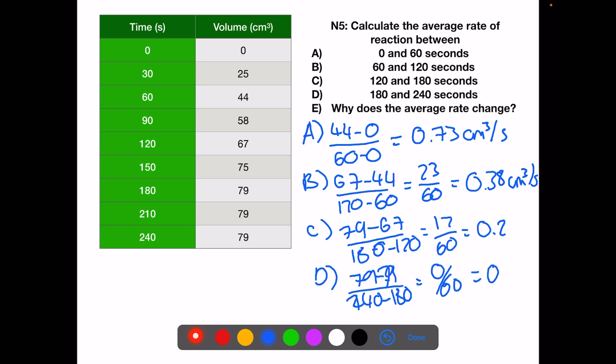So why does the average rate change? At point A, we are at the start of the reaction where we have a lot of reactants, so the average rate is faster. As we use up the reactants, the reaction starts to slow. Once they are all used up, the reaction is finished and the average rate will be 0.